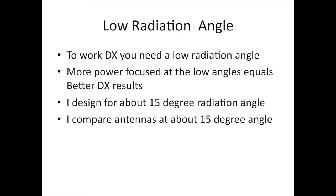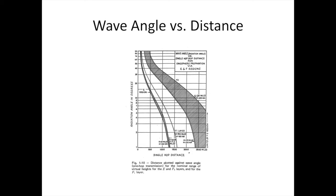To work DX you need a low radiation angle. More power focused at the low angle equals better DX results. I designed for about 15 degree radiation angle. I compare antennas at about the 15 degree elevation angle. This is a typical chart of wave angle versus distance for a single hop. Typically the lower the angle the better distance you get. 15 degrees is right around the center of the chart.